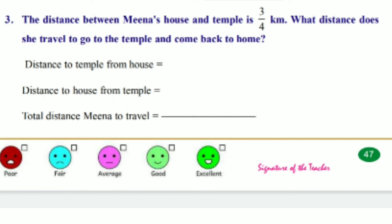Third one: the distance between Meena's house and temple is 3/4 kilometer. What distance does she travel to go to the temple and come back to home? Distance to temple from house is equals to 3/4 kilometer. Distance to house from temple...